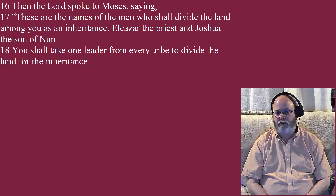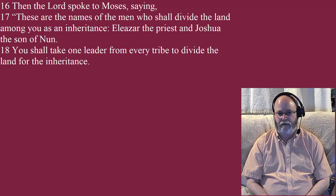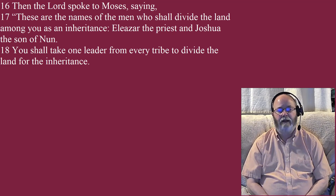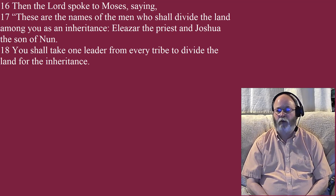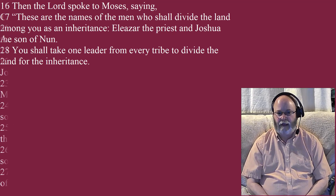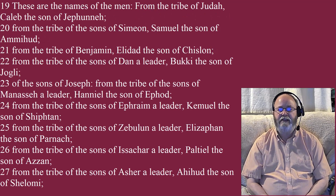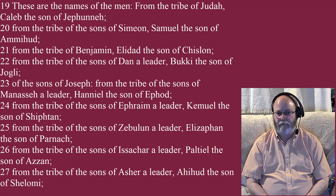Then the Lord spoke to Moses, saying, these are the names of the men who shall divide the land among you as an inheritance: Eleazar the priest and Joshua the son of Nun. You shall take one leader from every tribe to divide the land for the inheritance. These are the names of the men. From the tribe of Judah, Caleb the son of Jephunneh.